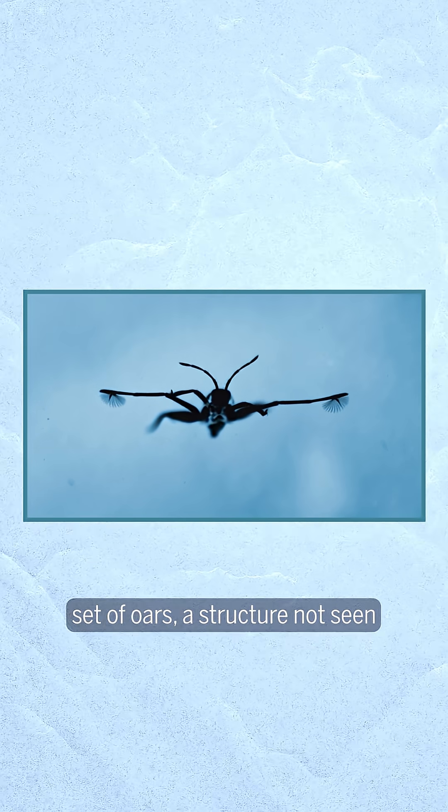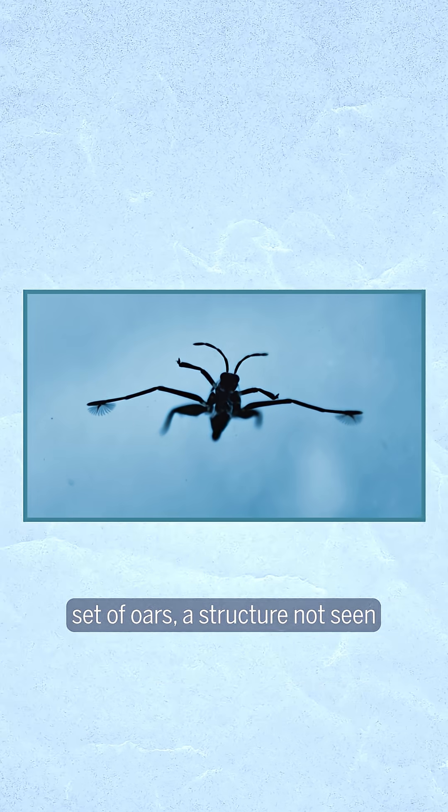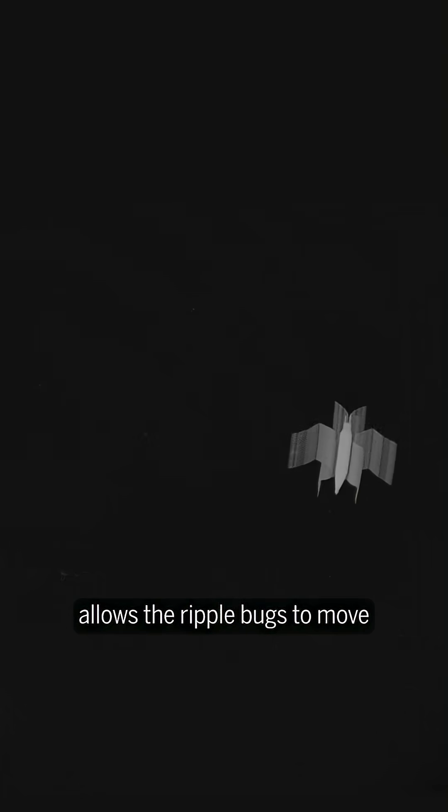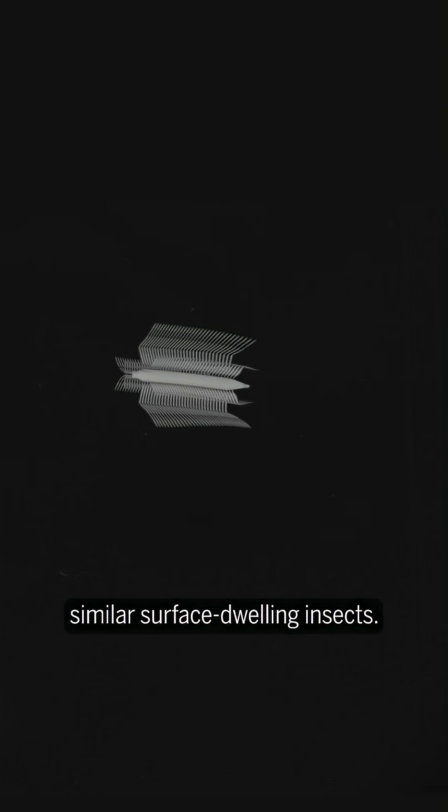Having a built-in set of oars—a structure not seen in other species of water striders—allows the ripple bugs to move faster and more efficiently than similar surface-dwelling insects.